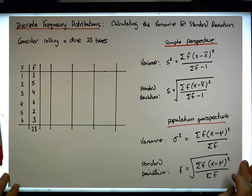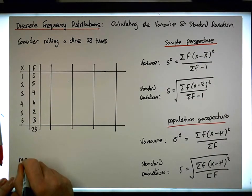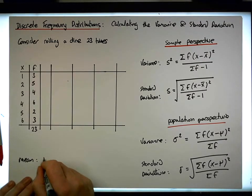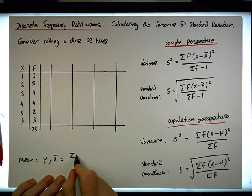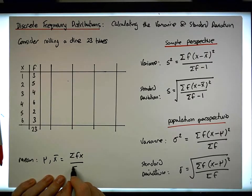We know that the mean, irrespective of whether it's the population mean or the sample mean, is simply equal to the sum of the frequencies times the x's divided by the sum of the frequencies.